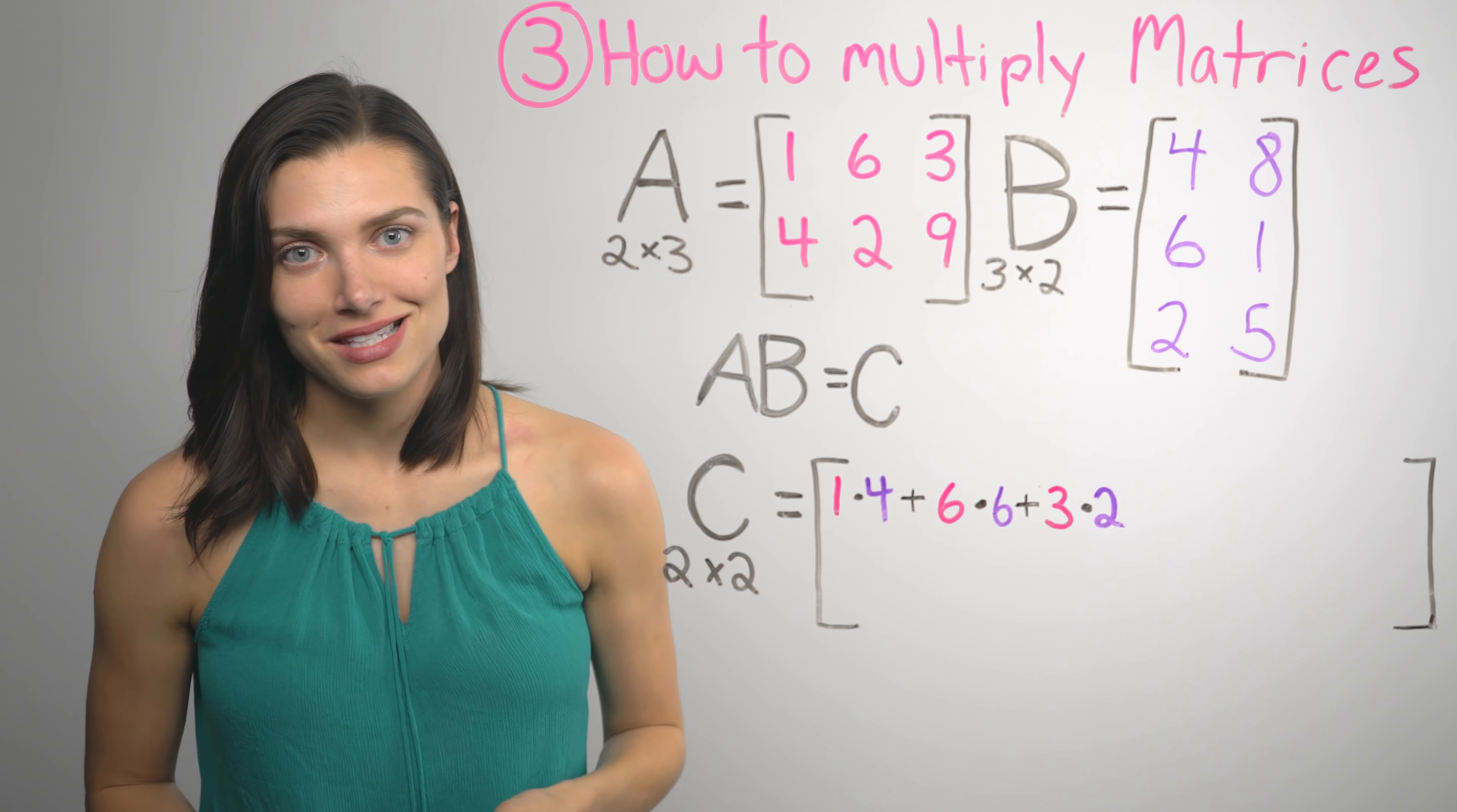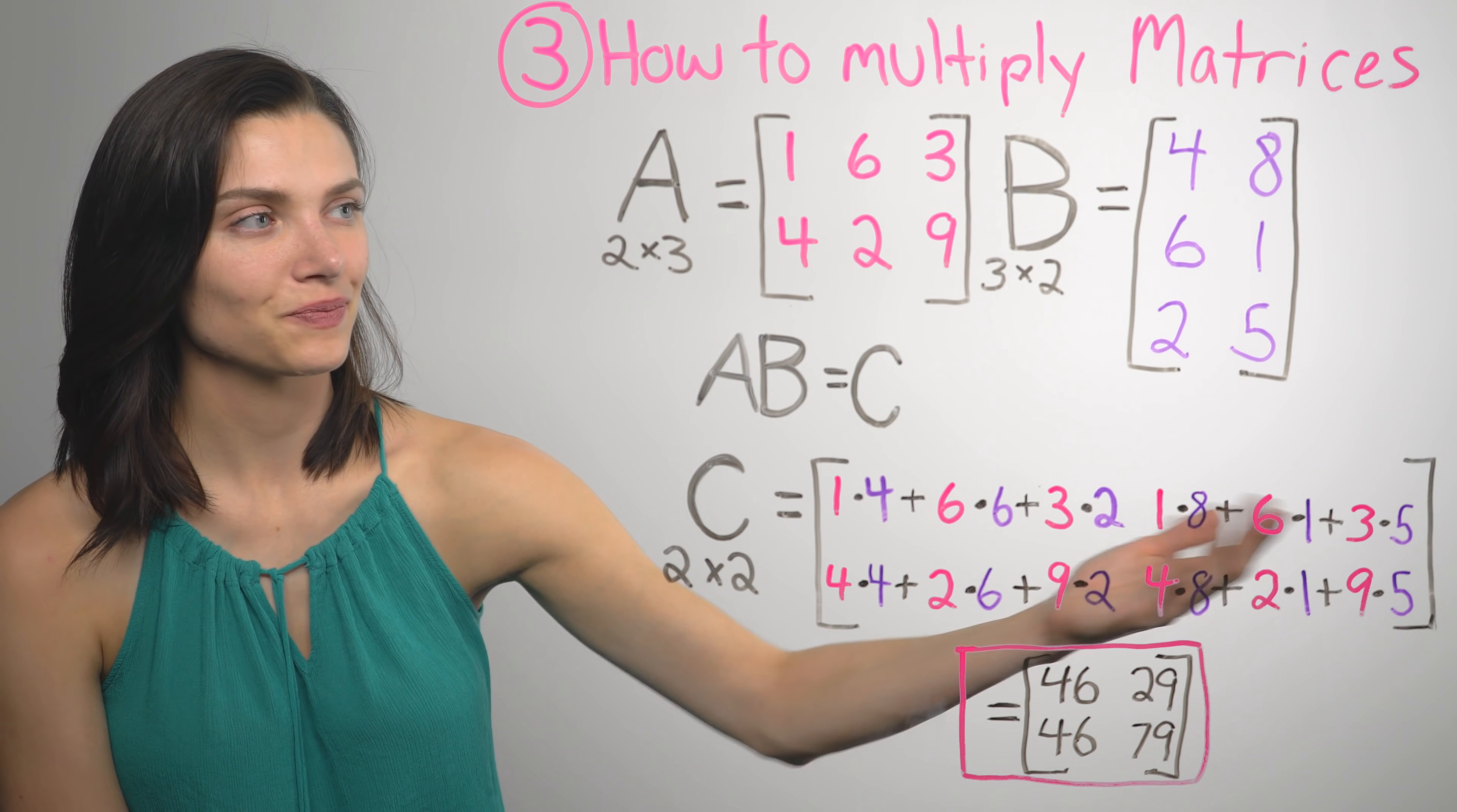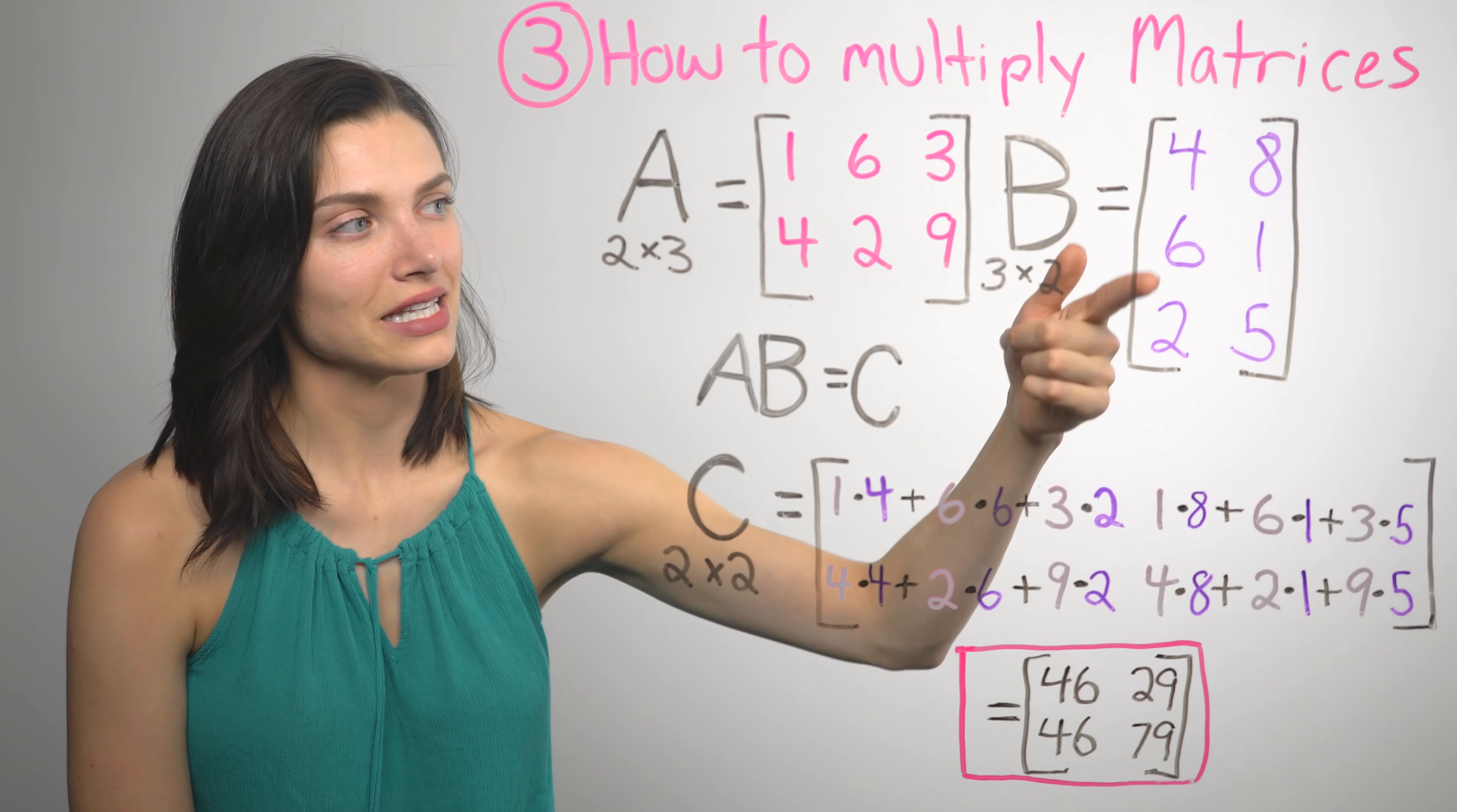So here are the other elements. So you can see it's the same thing with all the other elements. The rows line up in the first matrix. And the columns line up in the second matrix.